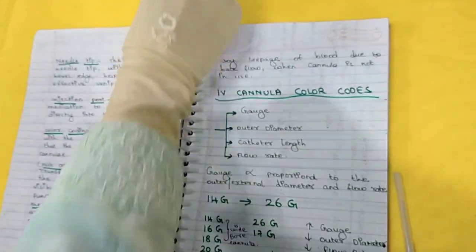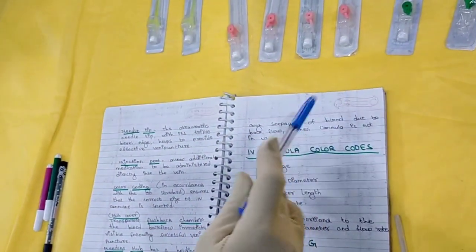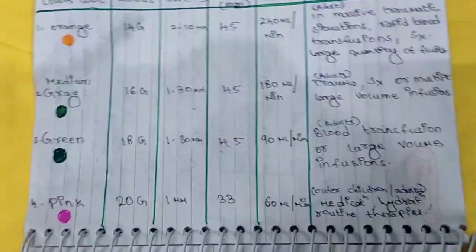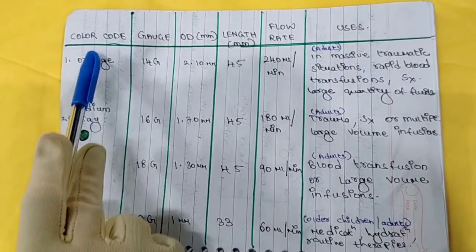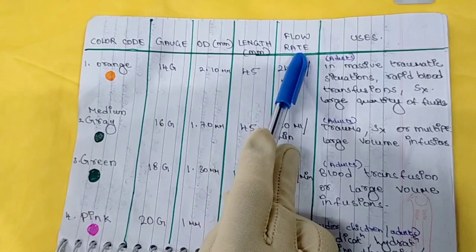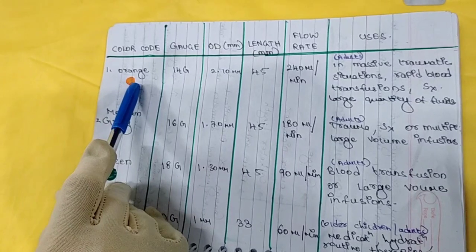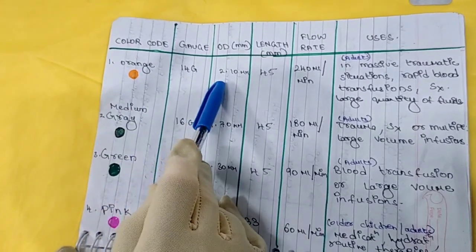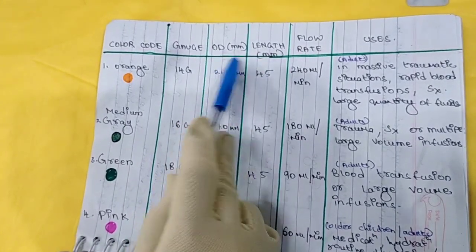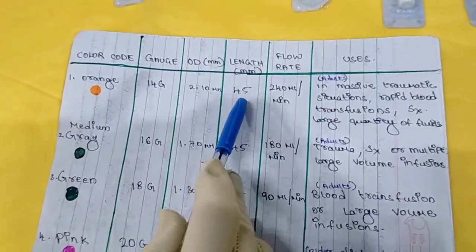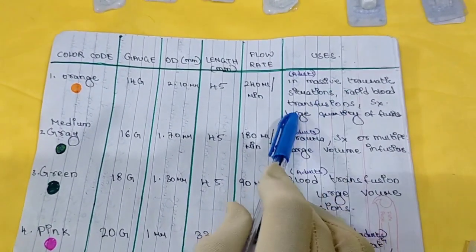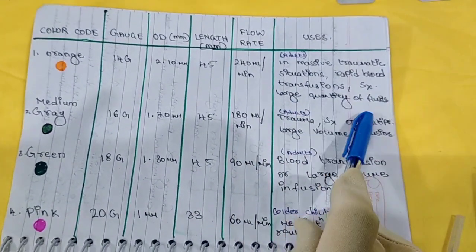I don't have all cannula sizes available, only pink, green, and yellow. But I will try my best to explain the color codes. The first color code is orange, which is 14 gauge. The outer diameter is 2.10 mm, the catheter length is 45 mm, and the flow rate is 240 ml per minute. This is used in traumatic situations requiring rapid blood transfusion, during surgeries, and when large quantities of fluids need to be infused.